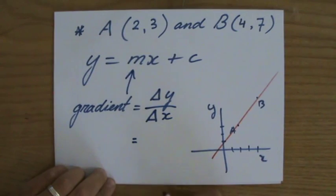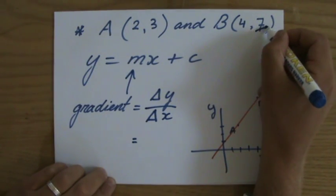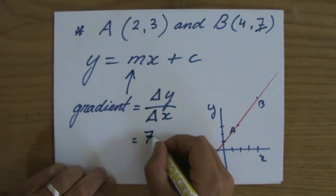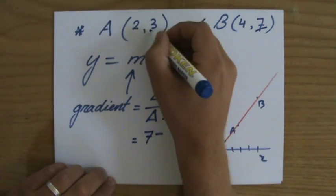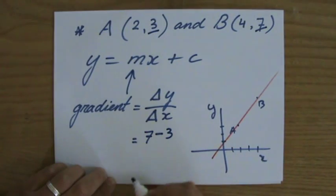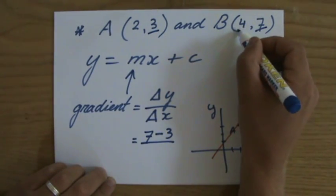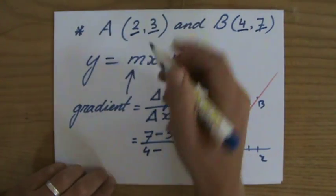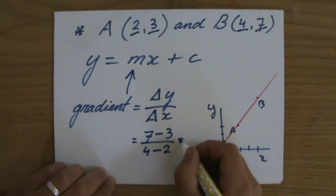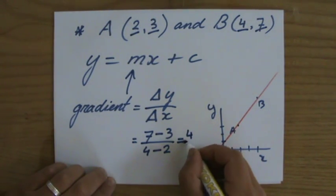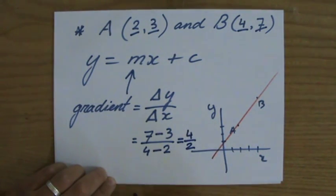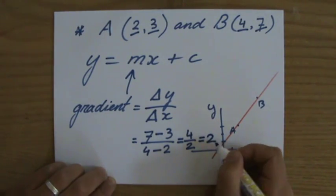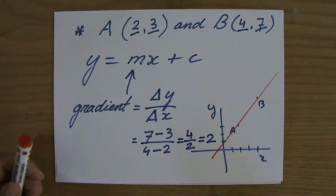Where we've said that the gradient is the difference in the y-direction. And I say delta y because delta is the Greek symbol we use to say difference. Difference in the y-direction divided by the difference in the x-direction. Now, what is the difference in the y-direction? Seven minus three. Over four minus two. Seven minus three is four. And four minus two is two. So four divided by two is two. The gradient is two.